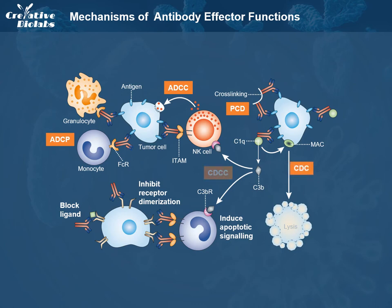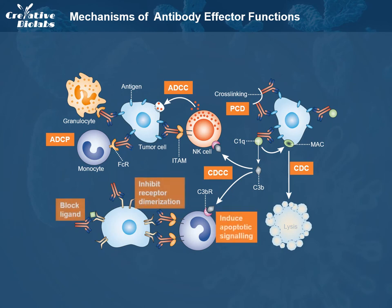C3b generated in CDC interacts with the C3b receptor and mediates complement-dependent cell-mediated cytotoxicity, which facilitates phagocytosis and cytolysis. Antibodies also have direct effects on target cells by blocking ligand binding, inhibiting receptor dimerization, and inducing apoptotic signaling.